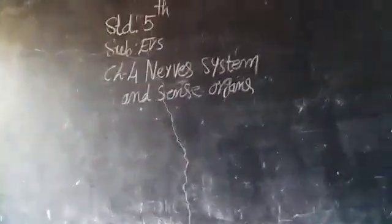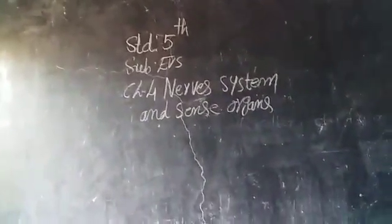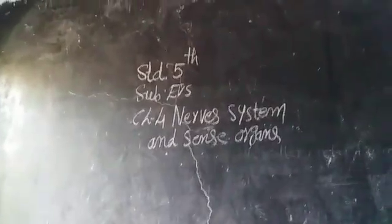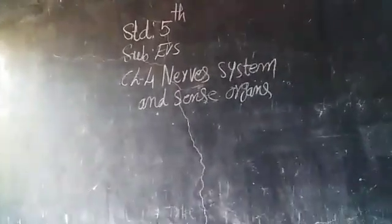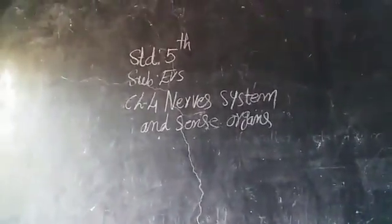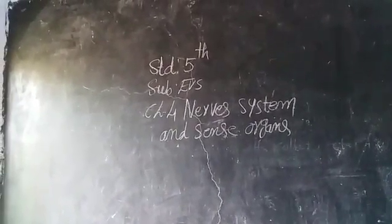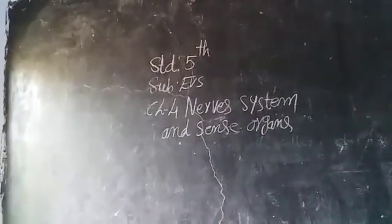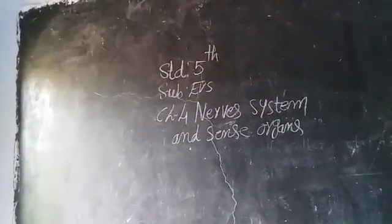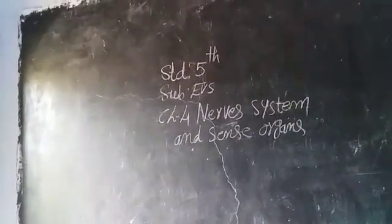This is Standard 5th subject, EVS, Chapter 4: Nervous System and Sense Organs. Our brain is the master organ of our body because it controls all other body parts with the help of nerves.